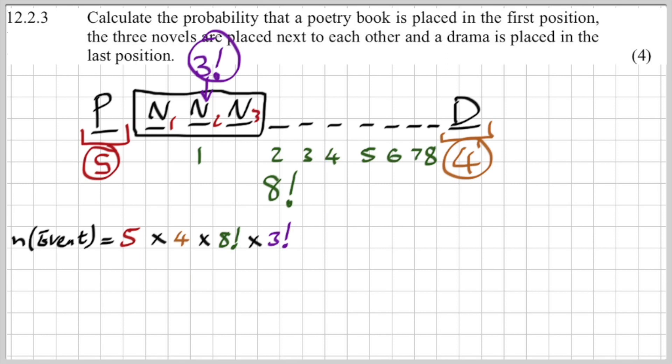What event is that? Well that's the whole event they described: poetry first, drama last, novels next to one another. But the actual question is the probability that this event takes place. I've got to divide this by how many different ways are possible if there's no restrictions at all. If there's no restrictions at all, that's 12 factorial ways that I got from 12.2.2. Which means my final answer is 1 over 99. So it's very close to 0.01 or one percent. There's not a big chance that this will happen, there's just a one percent chance that this will happen.